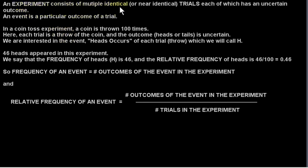An experiment consists of multiple identical or near identical trials, each of which has an uncertain outcome. An event is a particular outcome of a trial.